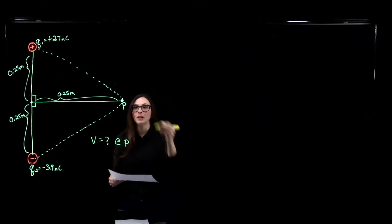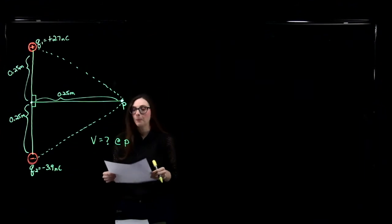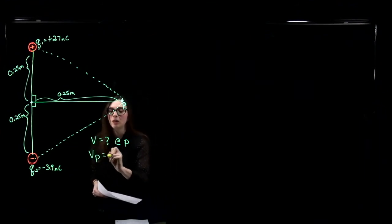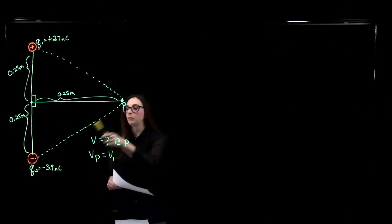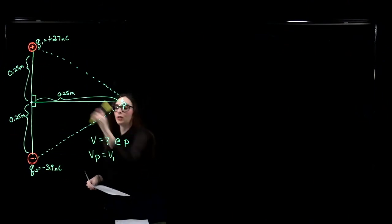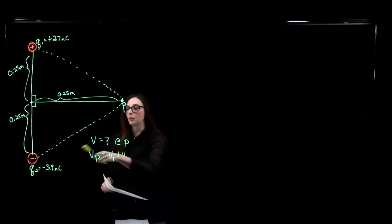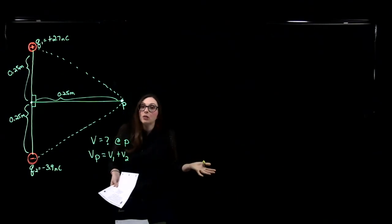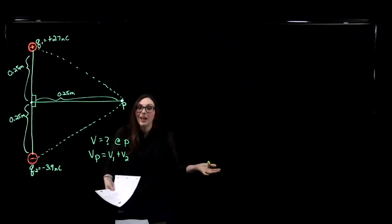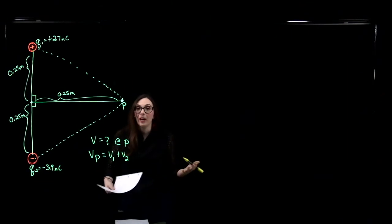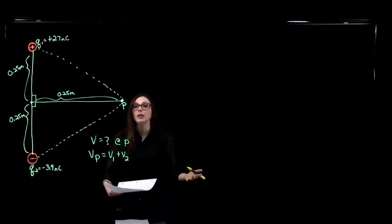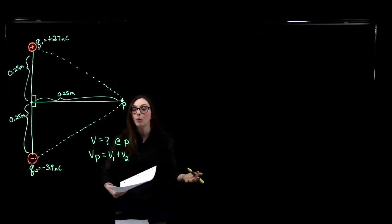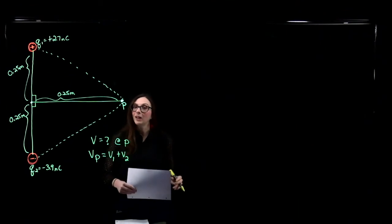In order to find the electric potential at point P, that's just going to be the sum of the electric potential at point P from charge 1 plus the electric potential at point P from charge 2. Electric potentials are scalars, so we don't have to worry about vector components, unlike what we'd have to do for the electric field.